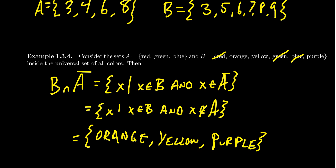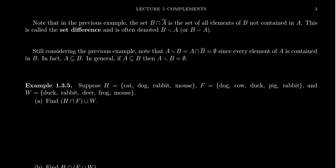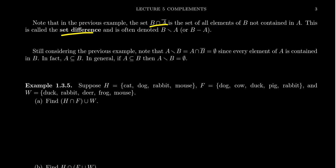Because of this observation, this warrants a definition — what we call a set difference. Notice that B intersect A complement is a well-defined set of all elements from B but not in A, and we didn't need the universe to define that. As such, this construction, B intersect A complement, is known as the set difference of the two sets — where we take away everything that was in A from B, and what's left over is the set difference.